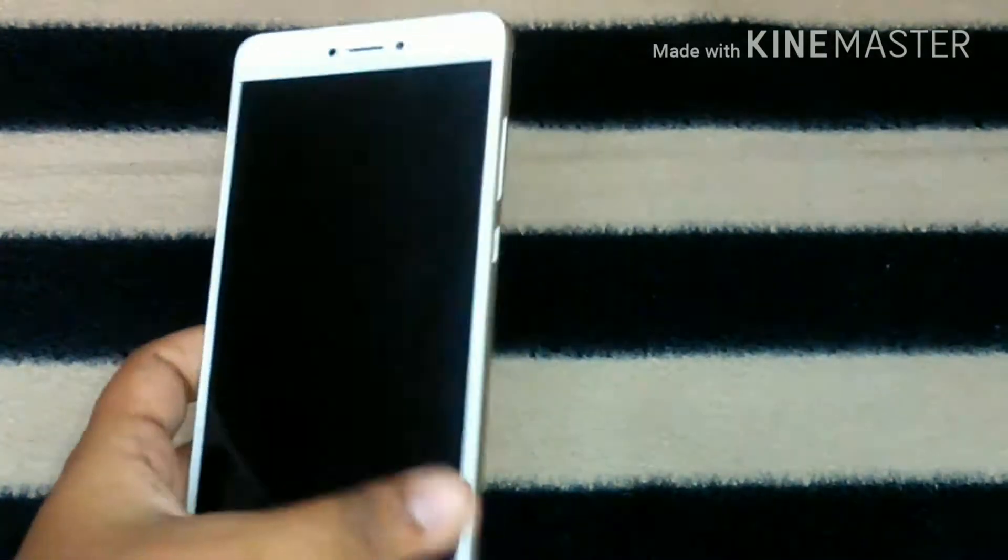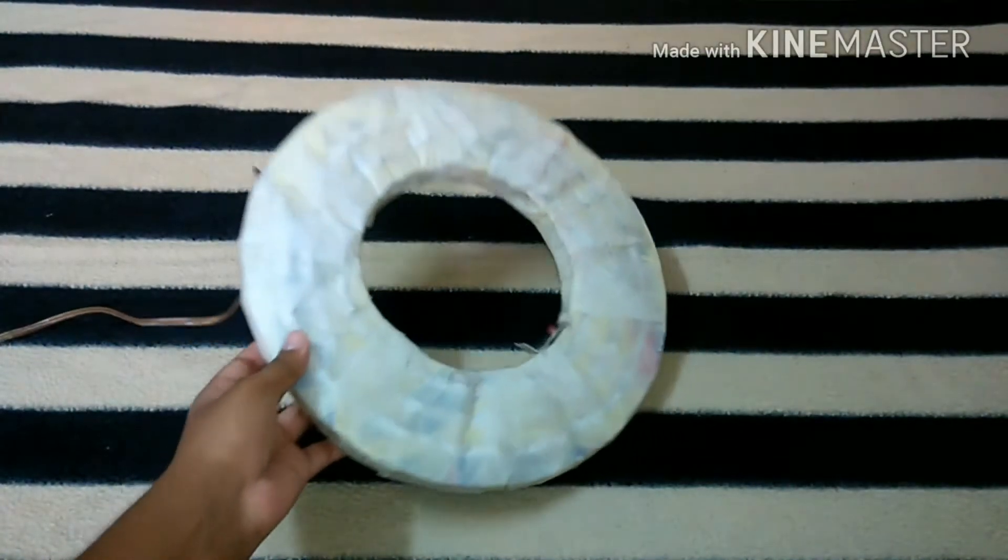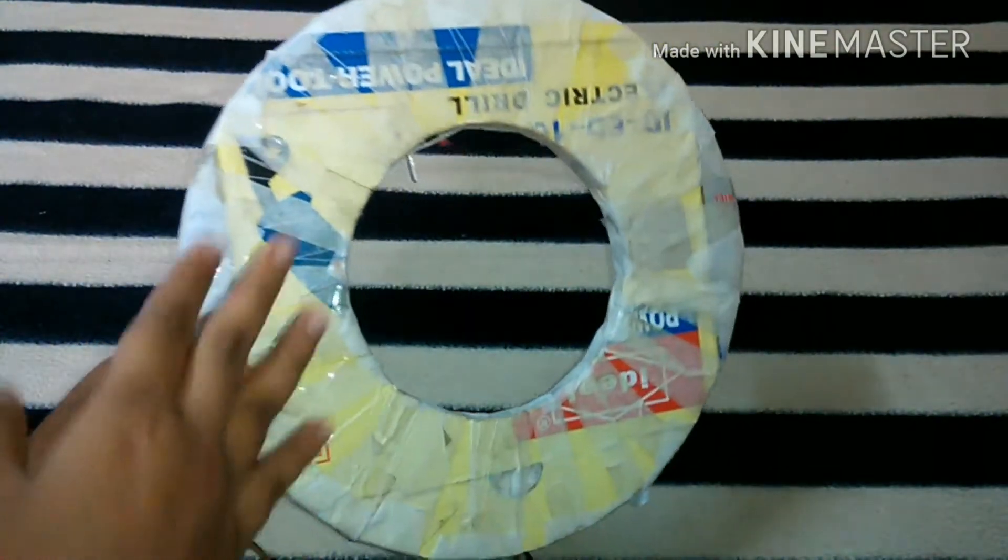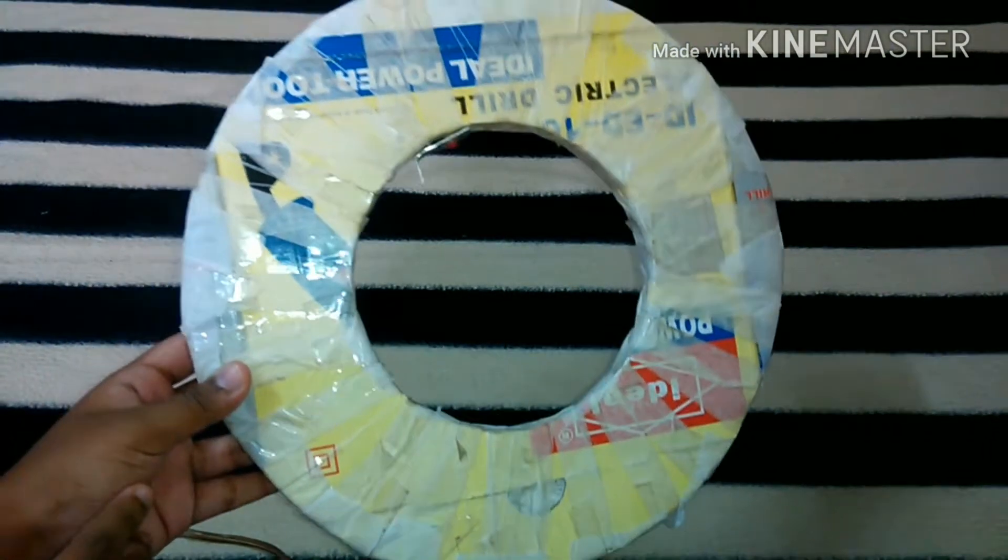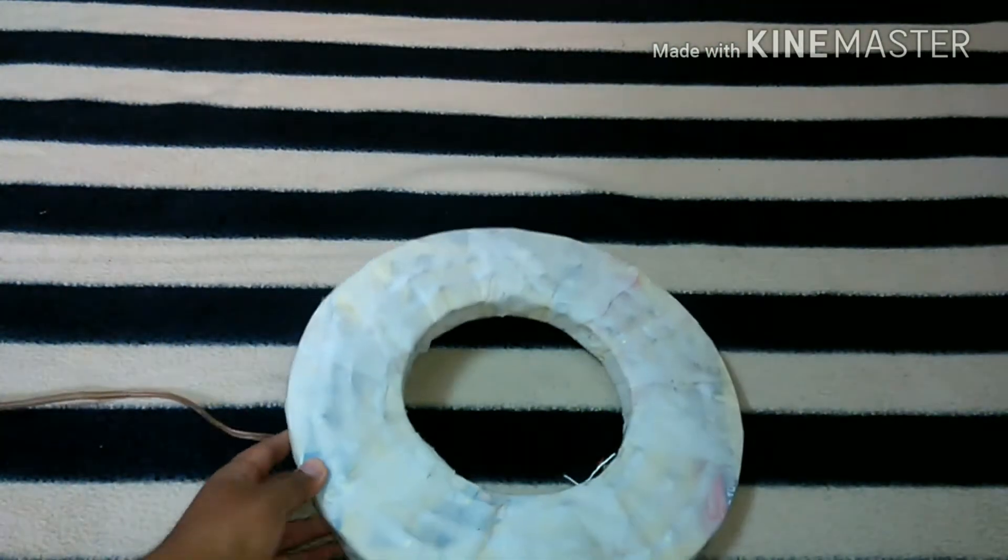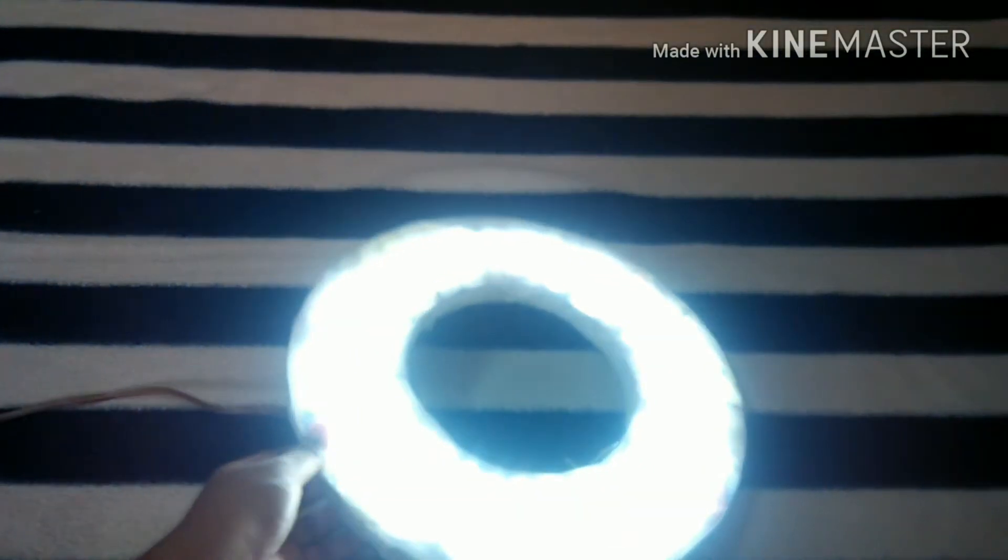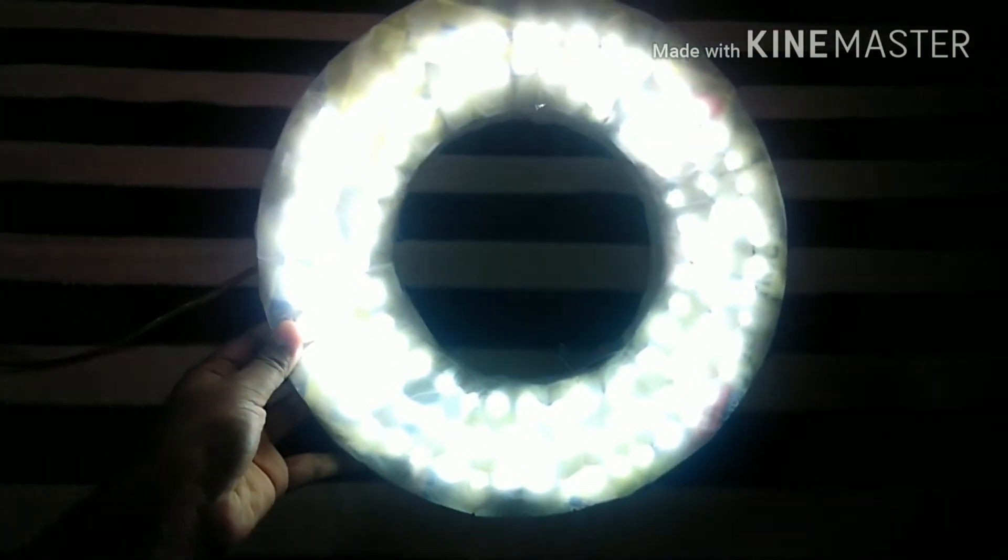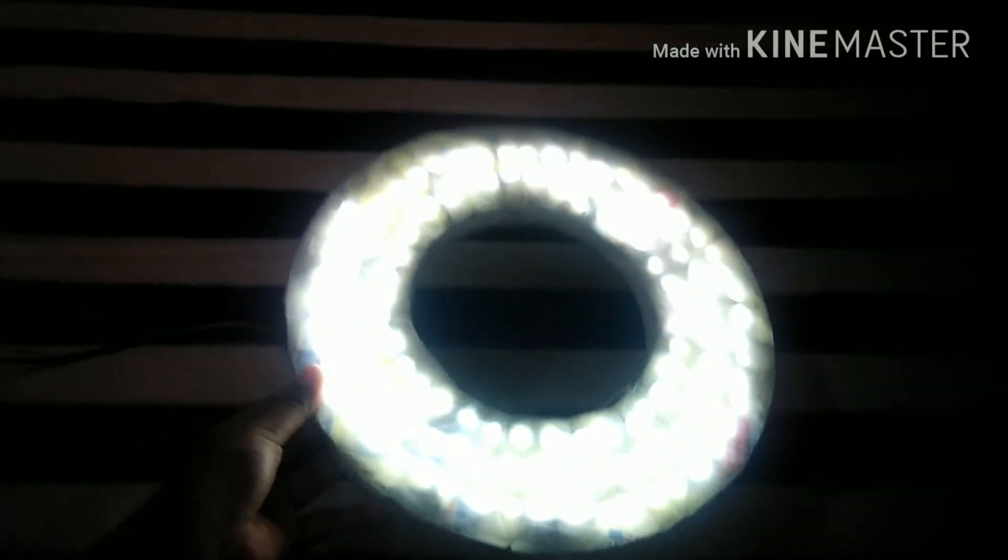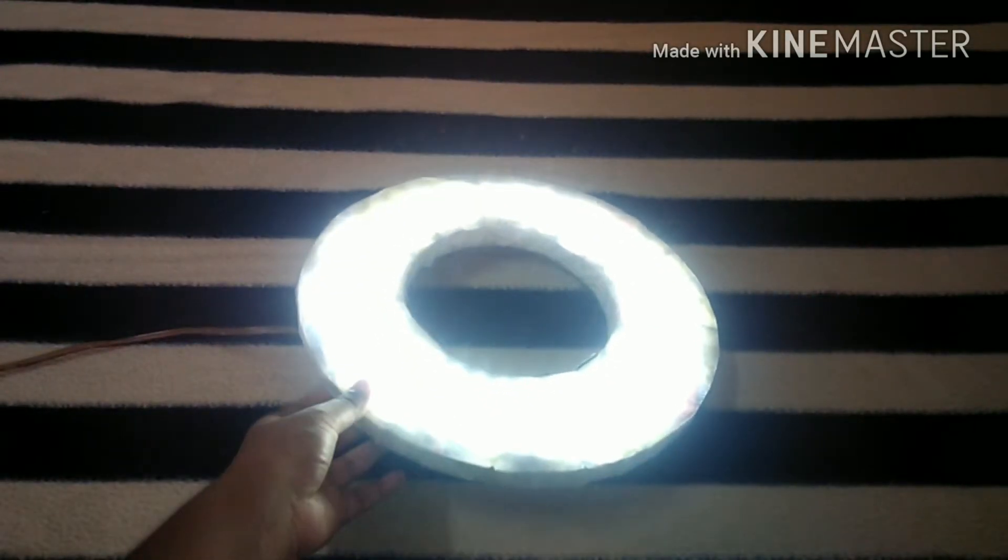And for my lighting I use this DIY ring light. I have DIYed this. It's a normal cardboard and I have used thermocol and LED lights. And this is how it looks when it is on. It gives a very nice lighting and I have used butter paper to give that softness.